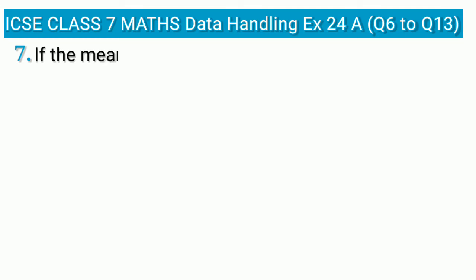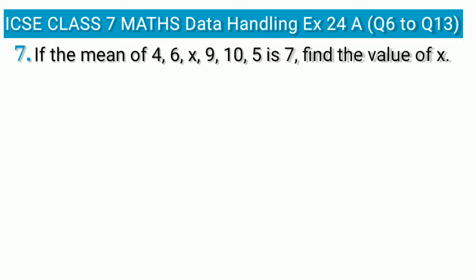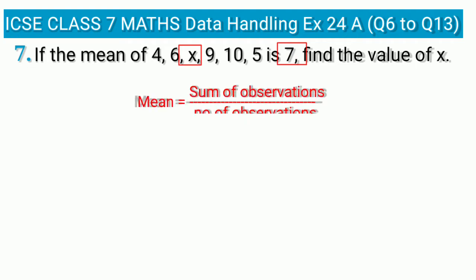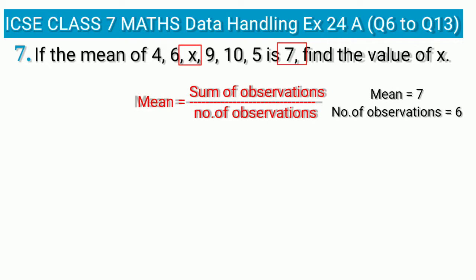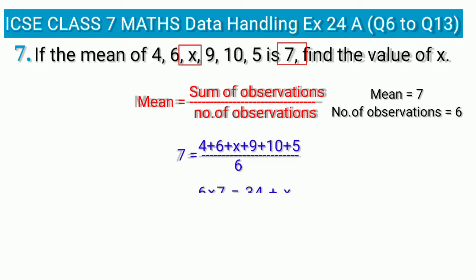Question 7: If the mean of 4, 6, x, 9, 10, 5 is 7, find the value of x. The mean is given but one observation x is unknown. Using the formula, mean equals sum of observations divided by number of observations: 7 equals (4 + 6 + x + 9 + 10 + 5) divided by 6. So 6 × 7 = 34 + x, giving 42 = 34 + x, therefore x = 8.